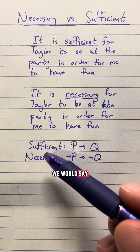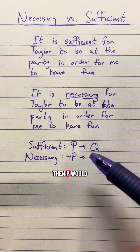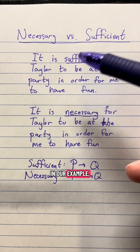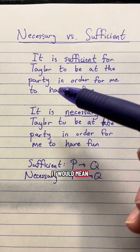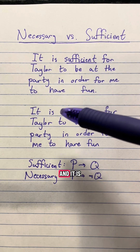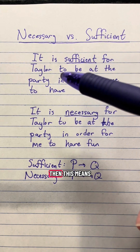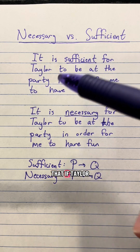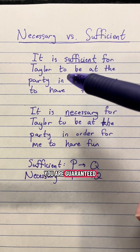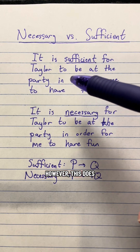In logical terms, we would say that for a condition to be sufficient, then P would imply Q. So in our example, it would mean that if Taylor is at the party and it is sufficient for you to have fun, then this means that if Taylor is at the party, you are guaranteed you are going to have fun.